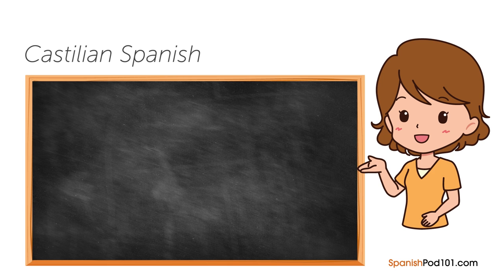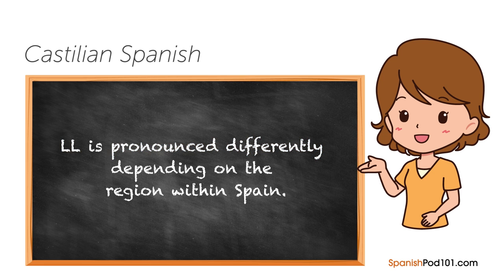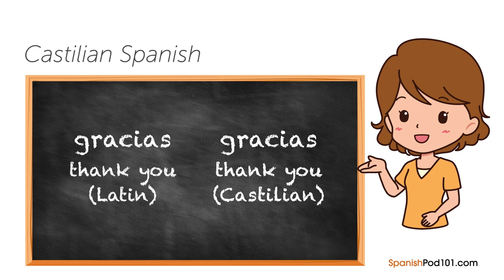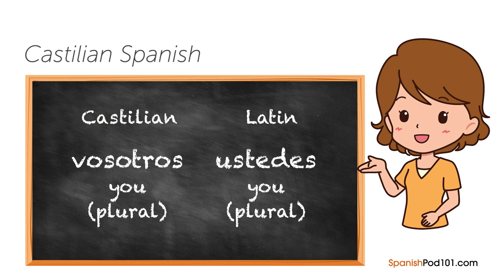Spanish in Spain is called Castilian Spanish. The Latin American C is pronounced with a TH sound — for example, 'gracias' is pronounced 'gracias' in Latin American Spanish and 'grasias' in Castilian Spanish. Another major difference is that Castilian Spanish often uses the plural form 'vosotros' instead of 'ustedes,' which is used in Latin America. Pretty fascinating! If you have any other questions, leave a comment and I'll try to answer them.